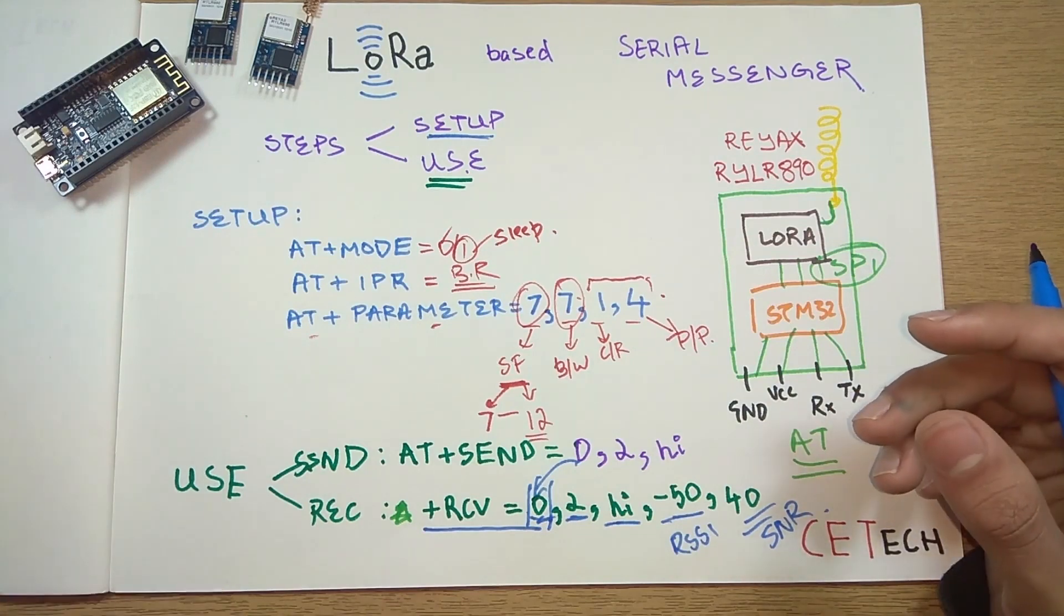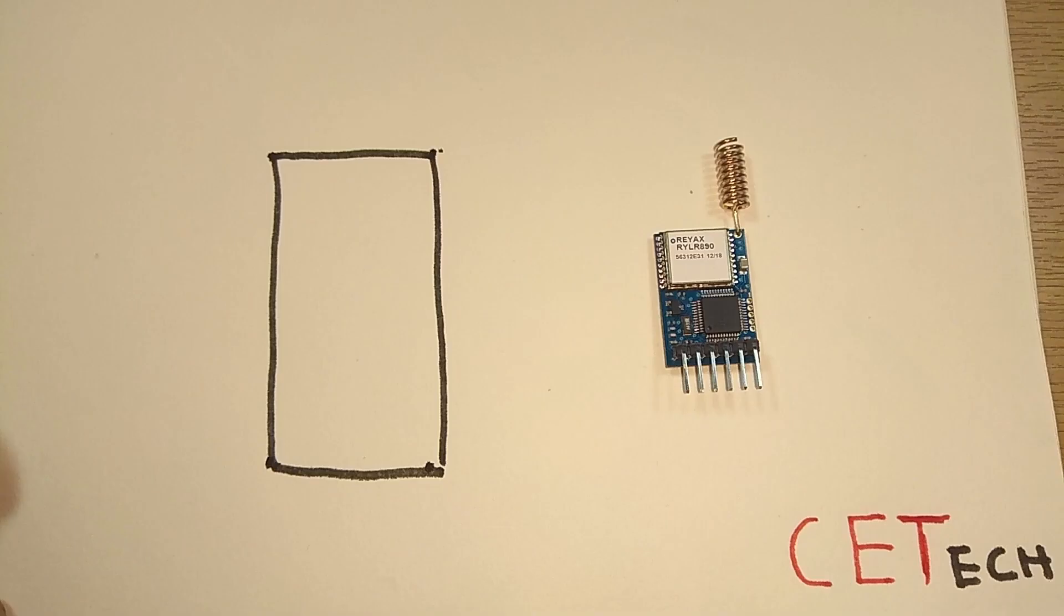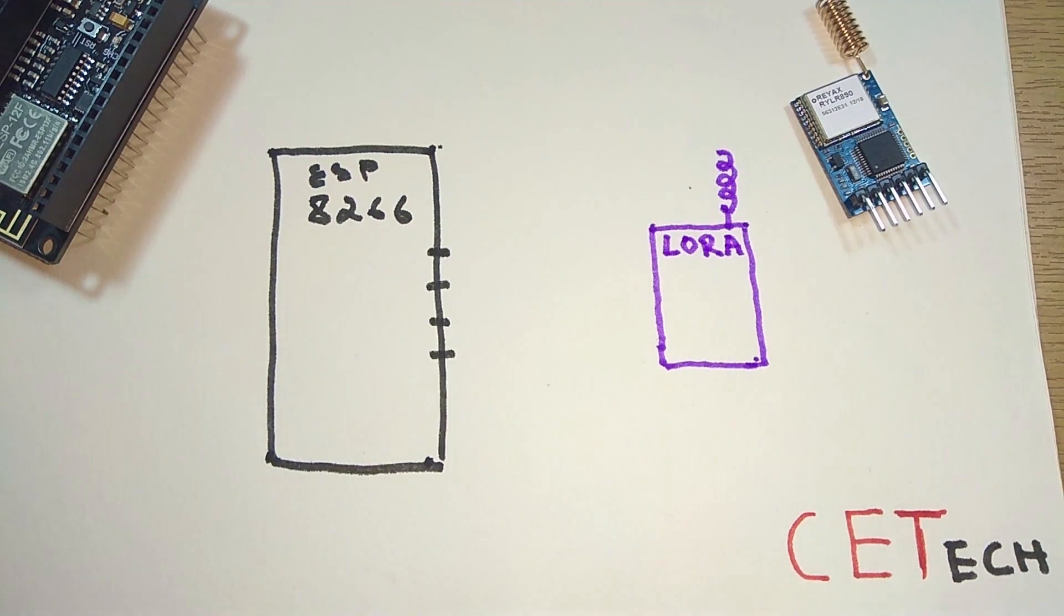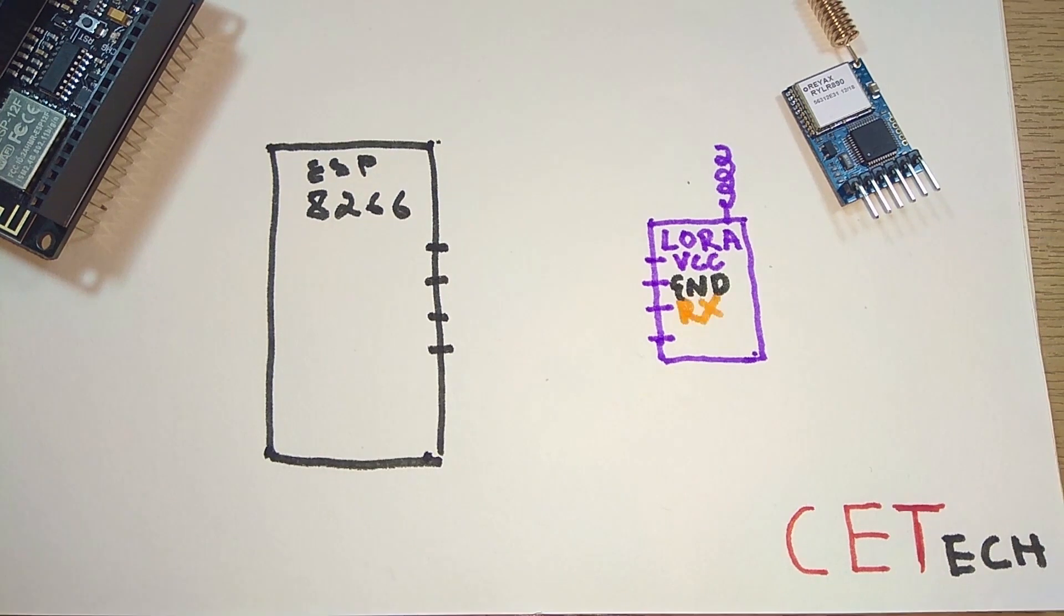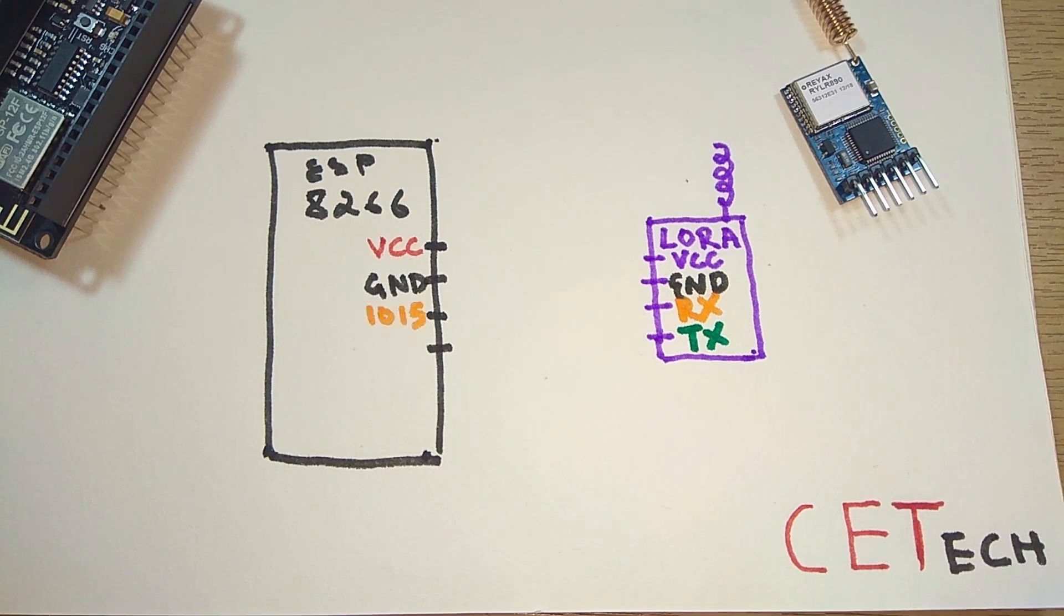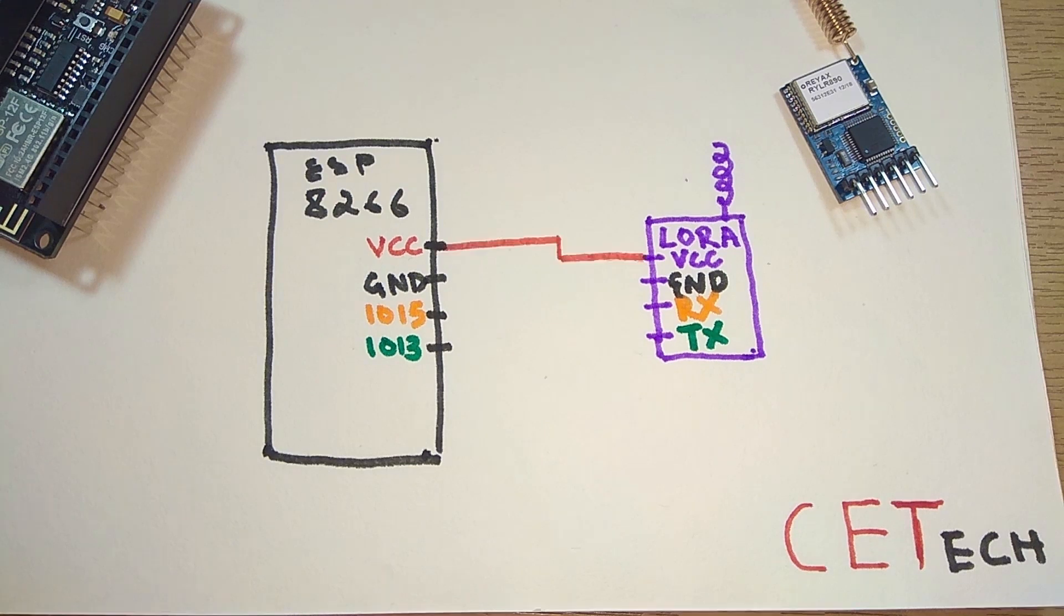Let's get started with that. For the project, firstly we need an ESP8266 module and the Reacts module. Representing those modules by these block diagrams, both of them have four pins that will connect to each other. The VCC, the ground, the RX and TX pins on the LoRa module will be connected to the VCC, ground, IO15, and IO13 pins on the ESP module. VCC will be connected to VCC, ground to ground, IO15 will be connected to the RX pin of the LoRa and act as a TX wire.